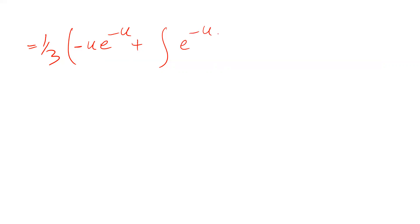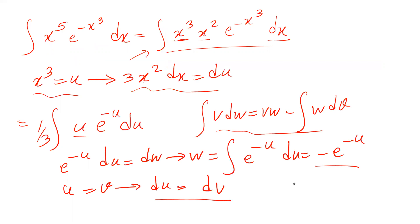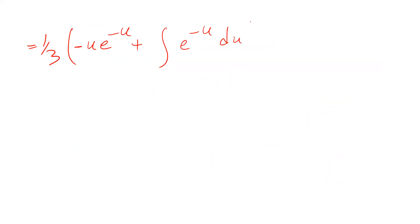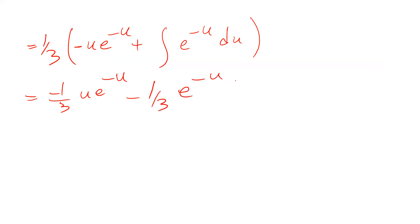So we get plus the integral of e with the power of minus u times dv, and dv equals du. This integral of e with the power of minus u du equals minus e with the power of minus u. That minus times the one-third constant gives minus one-third times e with the power of minus u.